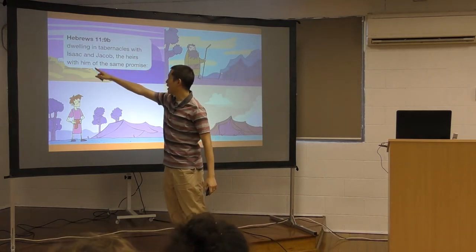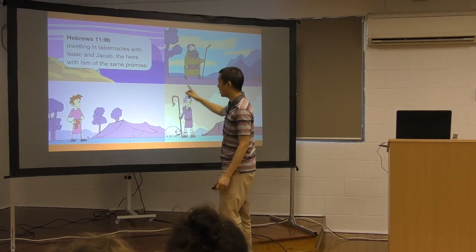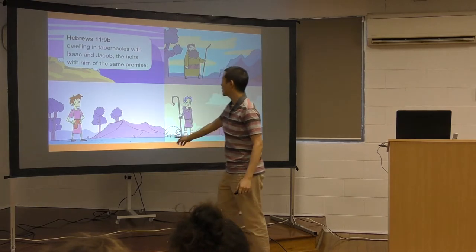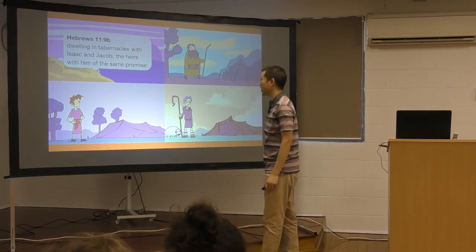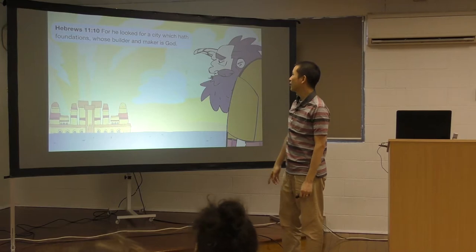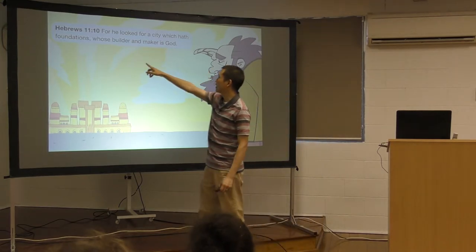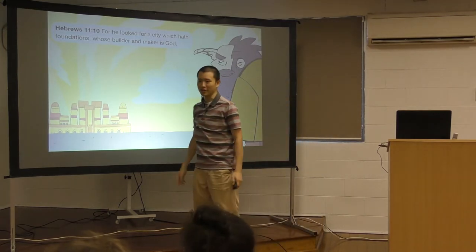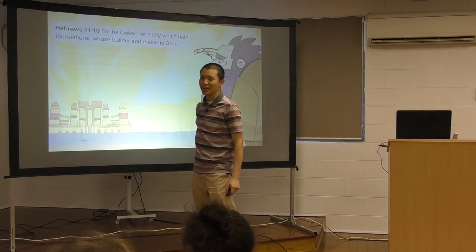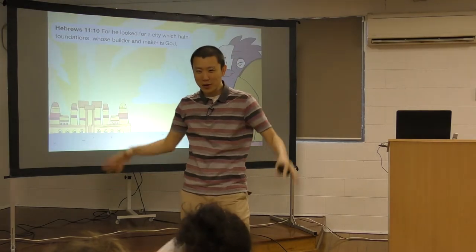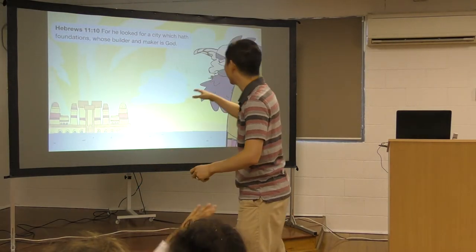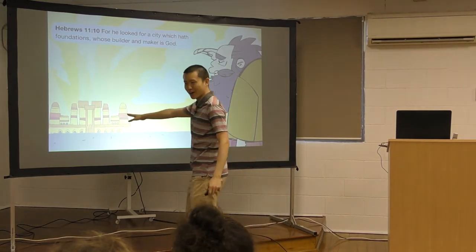Dwelling in tabernacles with Isaac, Jacob. So is Abraham, Isaac, Jacob, the heirs with him of the same promise. For he looked for a city which hath foundations, whose builder and maker is God. So why was he living in a tent? Because one day Abraham was looking for a permanent city, but it's not an earthly city. He's looking for one made by God, a heavenly city.